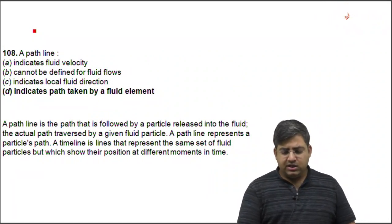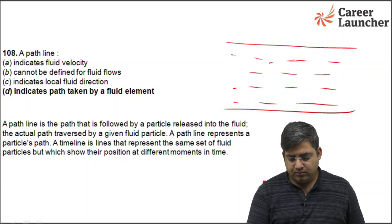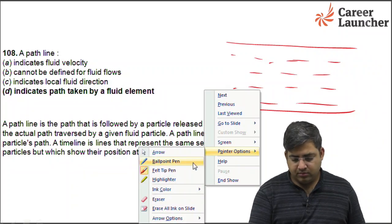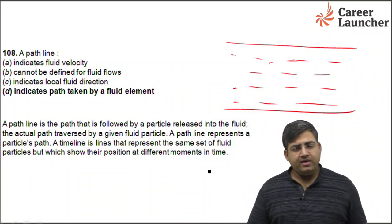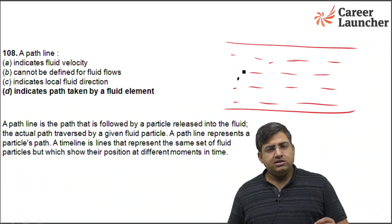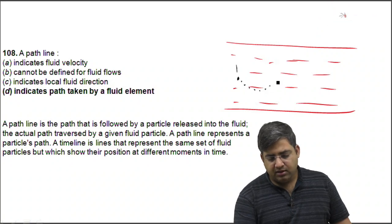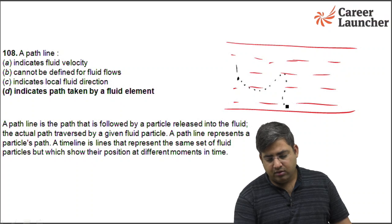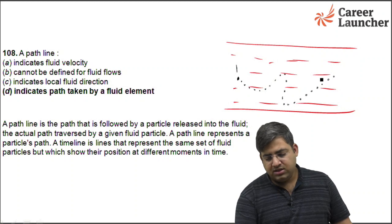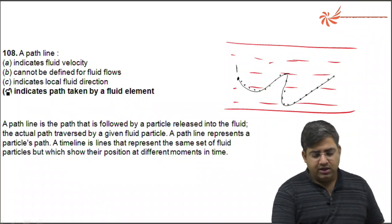What is a path line? A path line is the path traced by a fluid particle as it travels inside a fluid. Let's say a particle starts from point 1 and moves along some path — this traced path is called the path line. A path line is a line traced by a fluid element. The right answer is D.